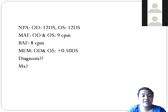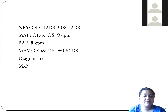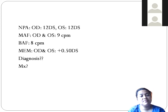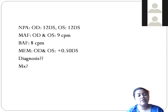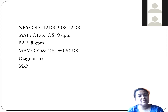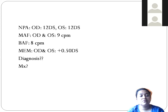Monocular accommodative facility for both right and left eye is 9 cycles per minute, which is acceptable. However, binocular accommodative facility is less than monocular, which is abnormal — normally binocular facility should be better than monocular. Despite this, the overall accommodative parameters are essentially normal. MEM retinoscopy shows a lag of plus 0.5, indicating a normal lag of accommodation with no lead or excess lag.